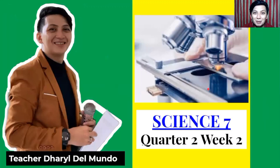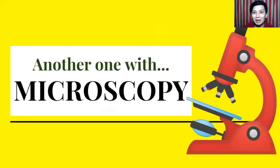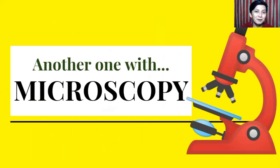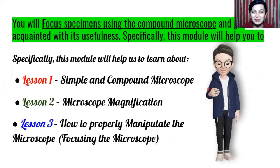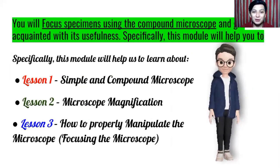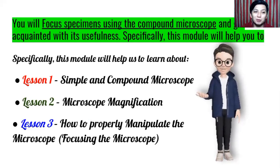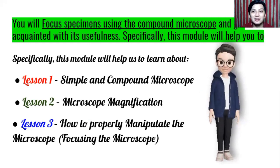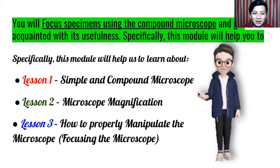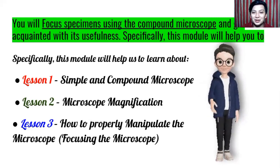As I said, this topic is all about the continuation of the microscope. Last time, we talked about the parts, the functions, and how to handle the microscope properly. This time, we need to be familiarized not just with the parts and functions, but also the different examples of the microscope and how to focus the specimen. You will focus specimens using the compound microscope. This module will help you learn about simple and compound microscope, microscope magnification, and how to properly manipulate the microscope by focusing the microscope and the specimen.